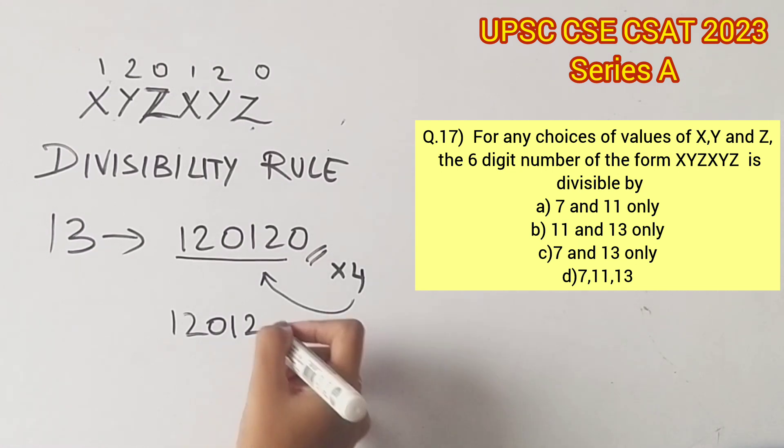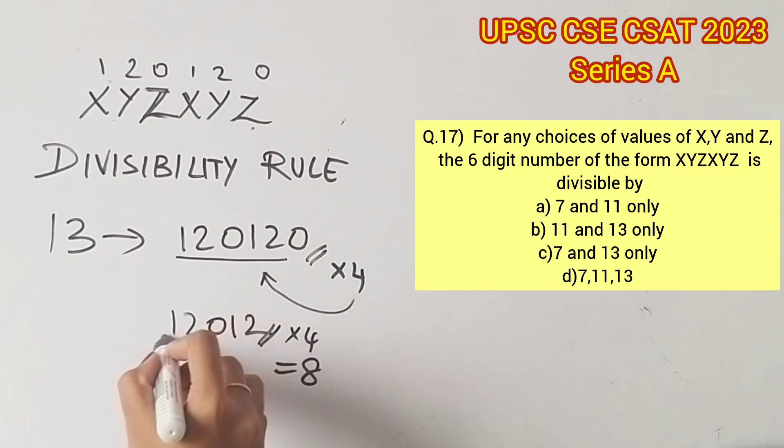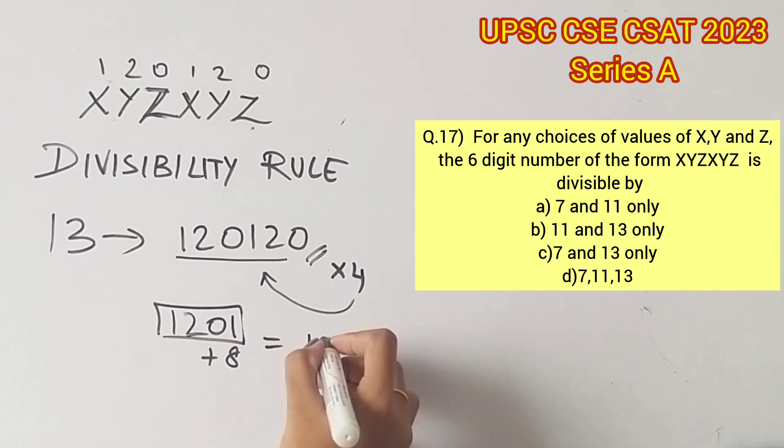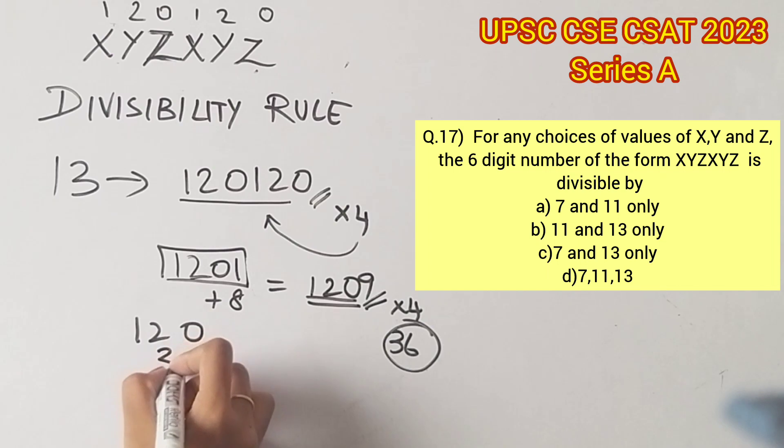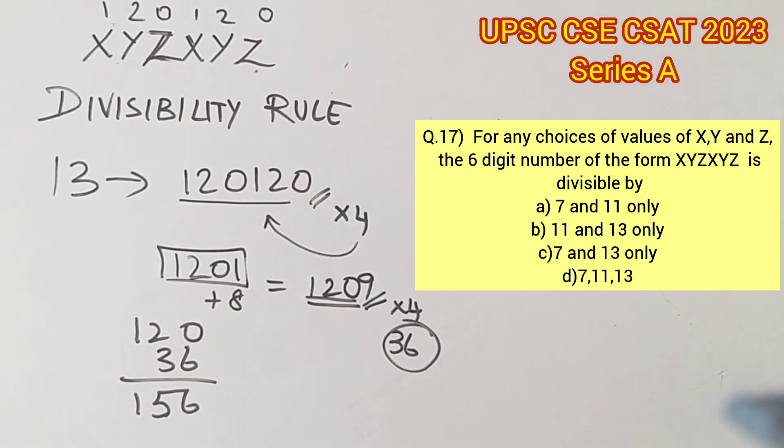Again, the next step is to multiply the last digit 2 with 4 and add it to the rest of the digits 1201. So 2 fours are 8. We are adding 8 to 1201, which would give us 1209. The last digit here is 9. 9 fours are 36. Now we have to add 36 to 120, which will give us 156. Now it's clear that 156 is divisible by 13 because 156 by 13 will give us 12.